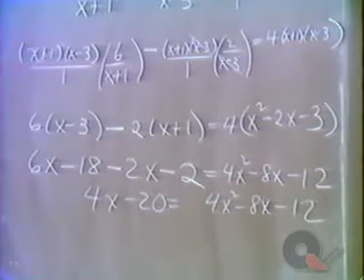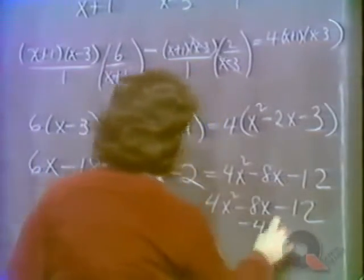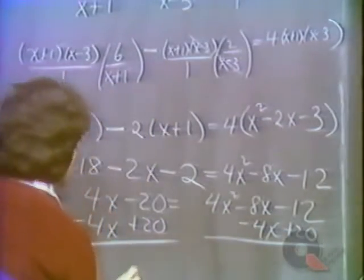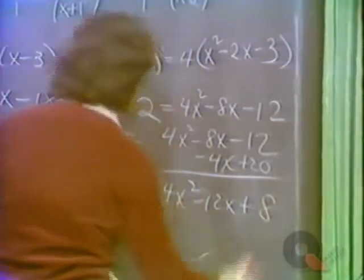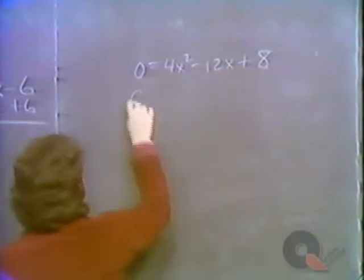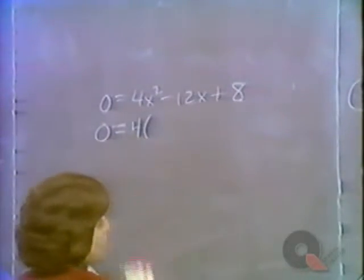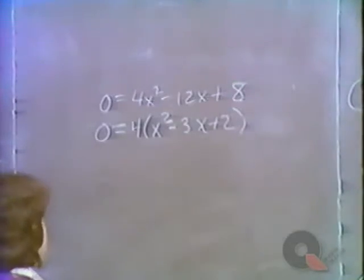We put the quadratic equation into standard form with everything on one side equal to zero. It seems easier to get everything on the right, so we subtract 4x from both sides and add 20 to both sides, giving 0 equals 4x squared minus 12x plus 8. Now we factor — remembering to always look for a common factor first. Here 4 is a common factor, leaving us with 4 times the quantity x squared minus 3x plus 2.